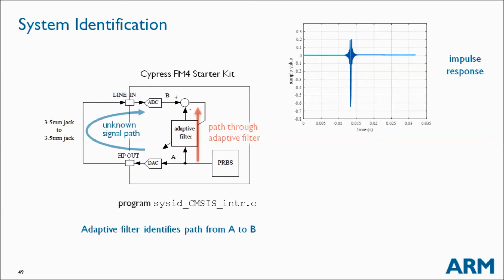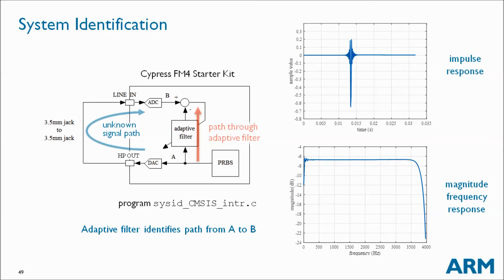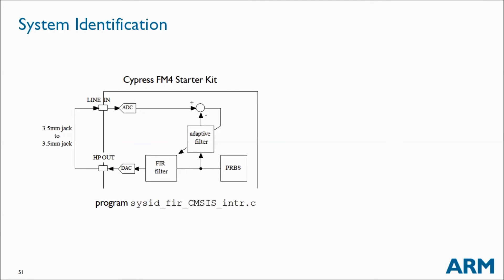...we can plot the adaptive filter's impulse and frequency responses. We can identify a latency in the signal path, and the shape of this part of the impulse response corresponds to a low-pass magnitude frequency response. This is a remarkably accurate representation of the characteristics of the signal path. If we want, we can add a filter designed using MATLAB and implemented in real time by the microcontroller to the unknown signal path. Here are the results for a bandpass filter.